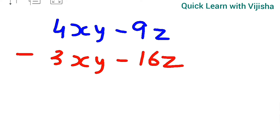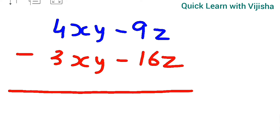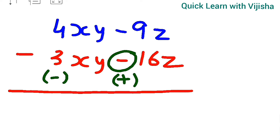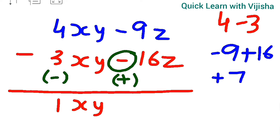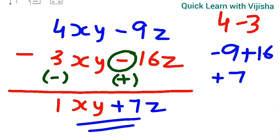While doing subtraction vertically, the signs get changed. The 3 has a plus sign so it becomes minus; the minus sign becomes plus. Using the new signs: 4 minus 3 gives 1xy, and for the z term, minus 9 with new sign plus 16 gives plus 7z. Both horizontal and vertical methods give the same answer.